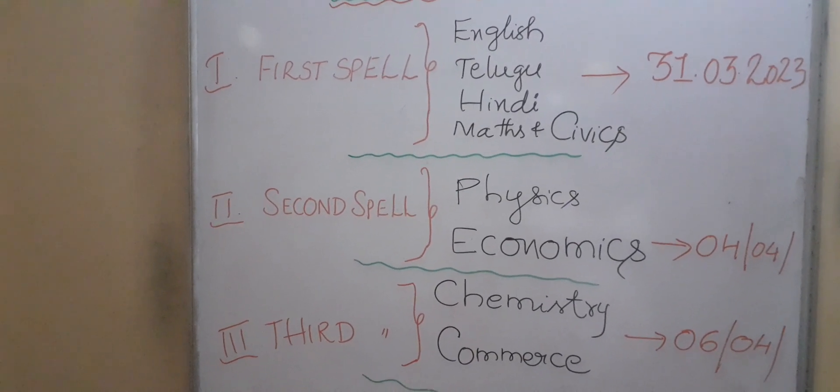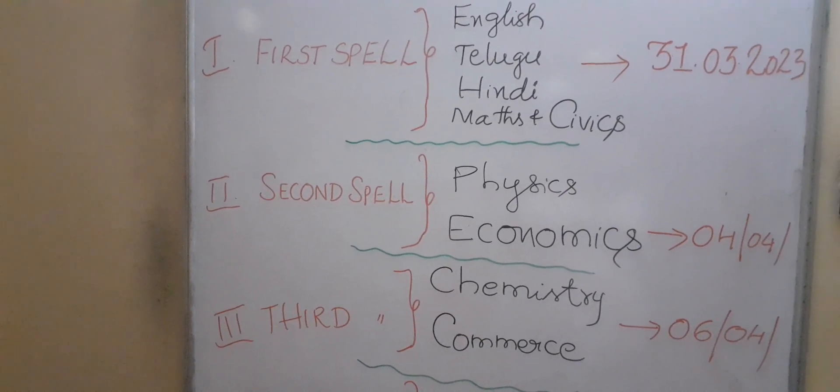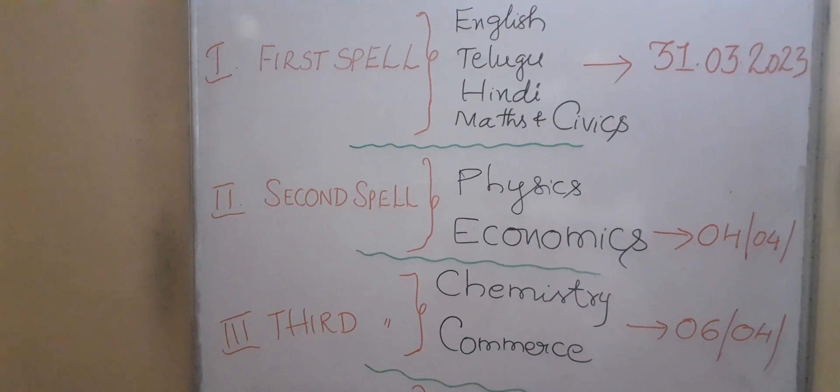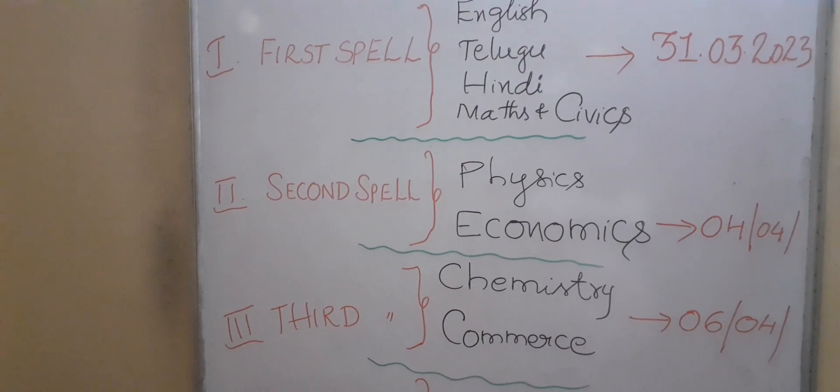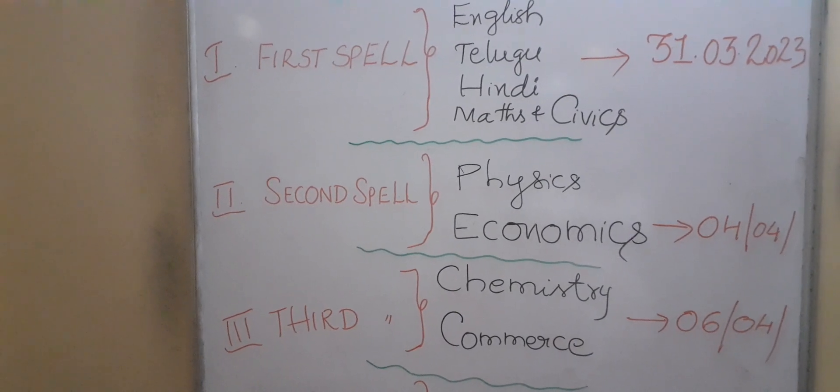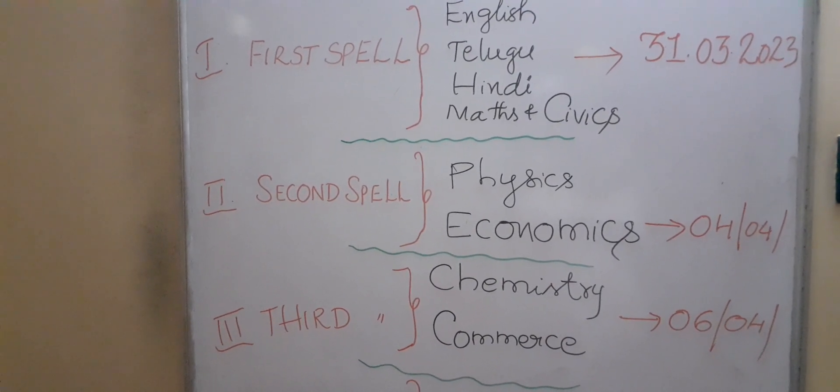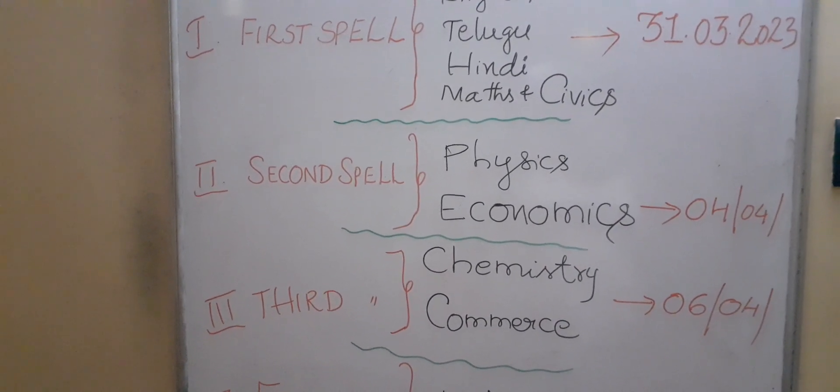The second spell is for Physics and Economics, starting from 4th April onwards. The third spell is for Chemistry and Commerce, starting from 6th April onwards.